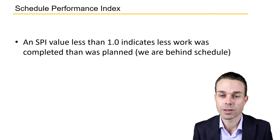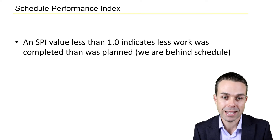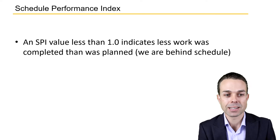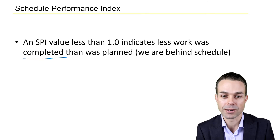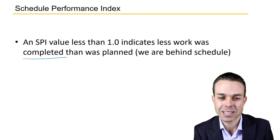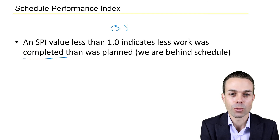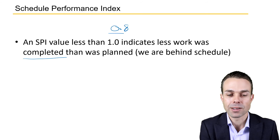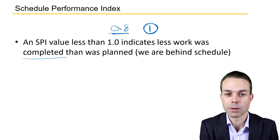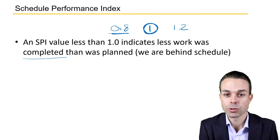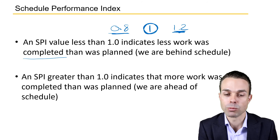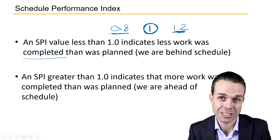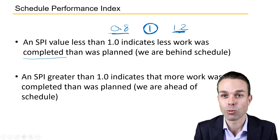If we end up with a value less than one, this indicates that less work was completed than was planned, so we're behind schedule. For example, 0.8 means less work than the 1.0 we had planned. If we had 1.2, that means more work was completed than planned, so we are ahead of schedule.